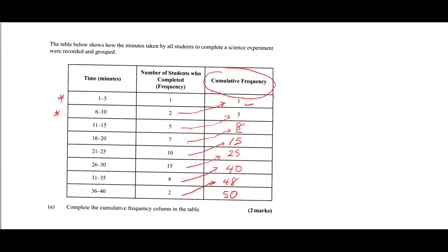This is what the cumulative frequency column looks like — pay attention to how each cumulative frequency is obtained. The last cumulative frequency is fifty, which means the total number of students in the class is fifty.